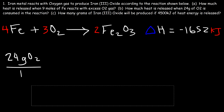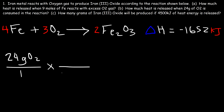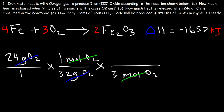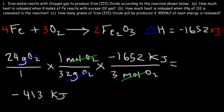Oxygen has an atomic mass of 16, so O2 is 16 times 2, which is 32 grams per mole. Now that we have the moles of O2, we use the fact that 3 moles of O2 generates 1652 kilojoules. We put 3 moles of O2 on the bottom and 1652 kilojoules on top. The calculation is 24 divided by 32, which is 0.75, times 1652 divided by 3, giving negative 413 kilojoules of thermal energy.